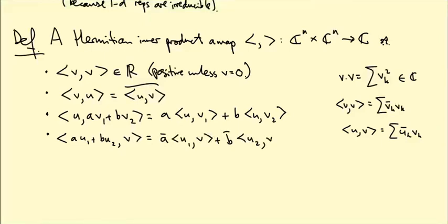So this is not linear in this entry. When you pull the scalar outside the brackets, it picks up a conjugate sign. So it's a bit of a funny formula, but it's entirely intended to abstract the properties of this example.